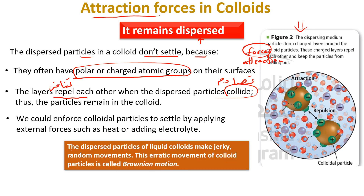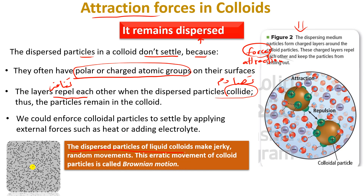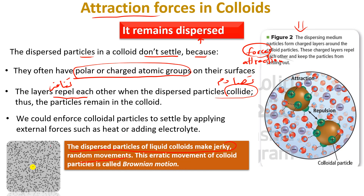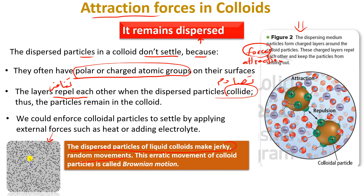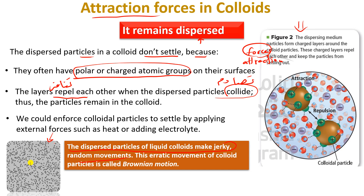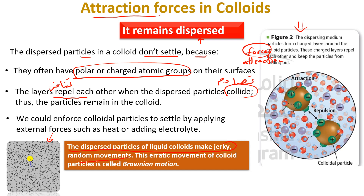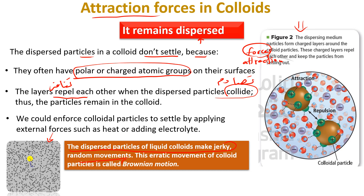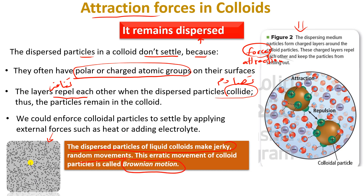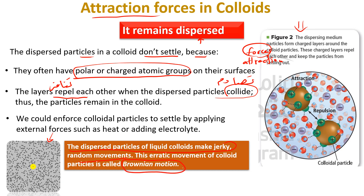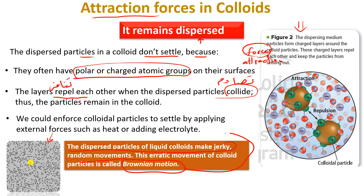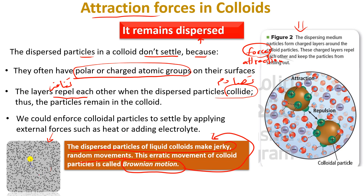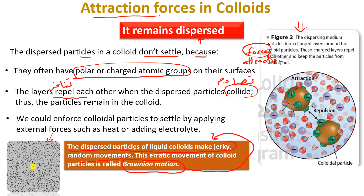The dispersed particles of a liquid colloid make jerky, random movements. These particles move continuously and randomly — هاي الحركة تسمى — and this movement is called Brownian motion. We need to know this: Brownian motion is the movement of particles in a liquid colloid.